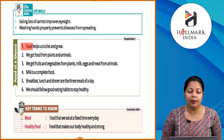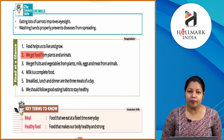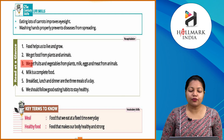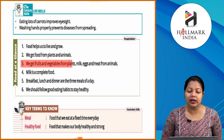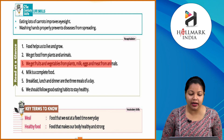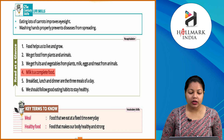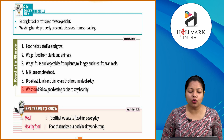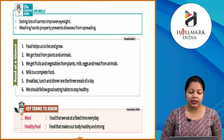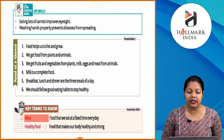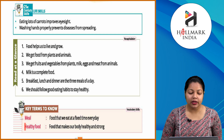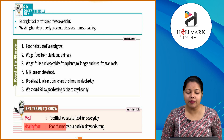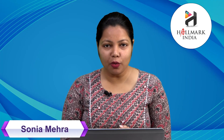Read at a glance. Food helps us to live and grow. We get food from plants and animals — fruits and vegetables from plants, milk, eggs and meat from animals. Milk is a complete food. Breakfast, lunch and dinner are the three meals of the day. We should follow good eating habits to stay healthy. Key terms: food that we eat at a fixed time every day; healthy food — food that makes our body healthy and strong. Bacho, I hope yeh chapter samajh mein aaya hoga. Abhi ki exercise ki practice aap khud se karenge.